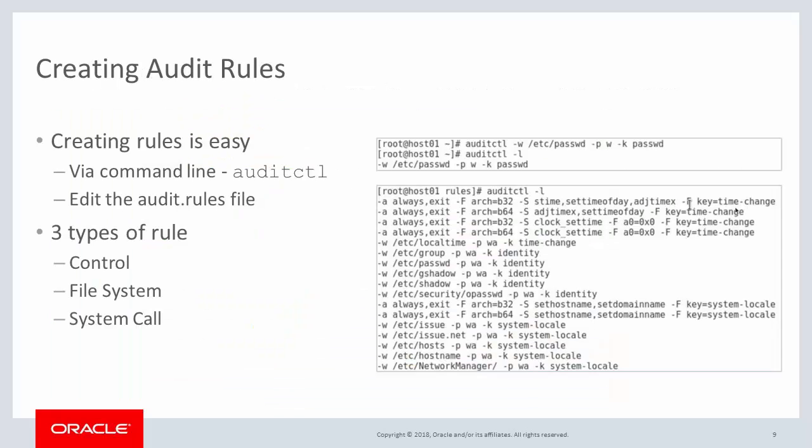Creating any of the three control, file system, or system call security rules is easy. It can be done using the auditctl command from the command line, but remember that rules created from the command line are lost if you reboot the system. For persistent rules, create them by editing them into the audit.rules file. You simply write rules into the file with the same syntax as used with the auditctl command, or you can create various rules files which you then store in the rules.d directory.